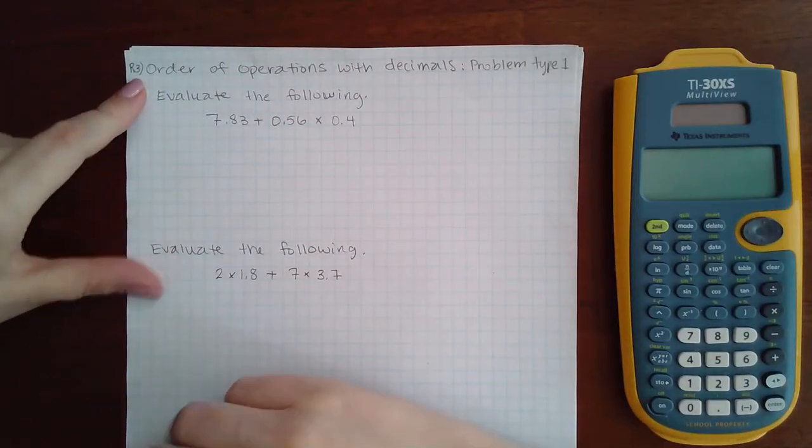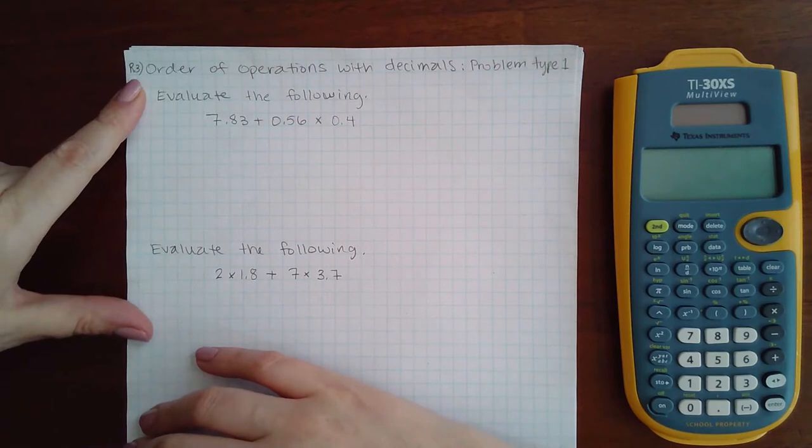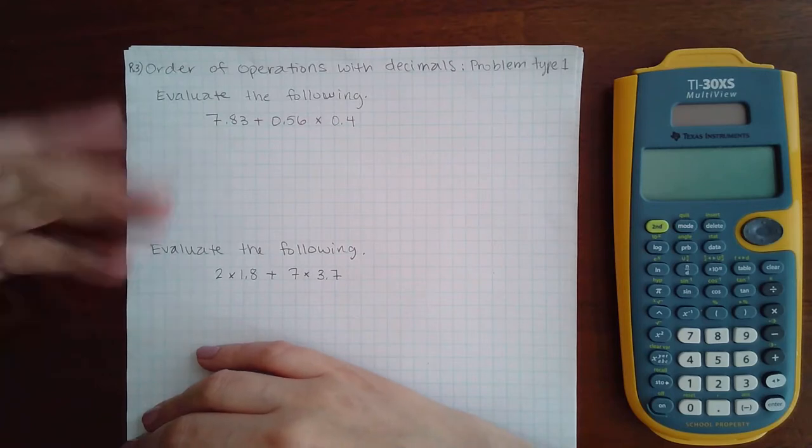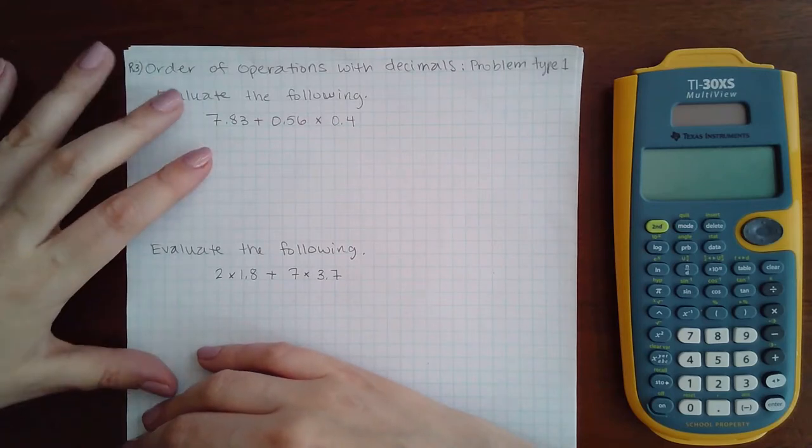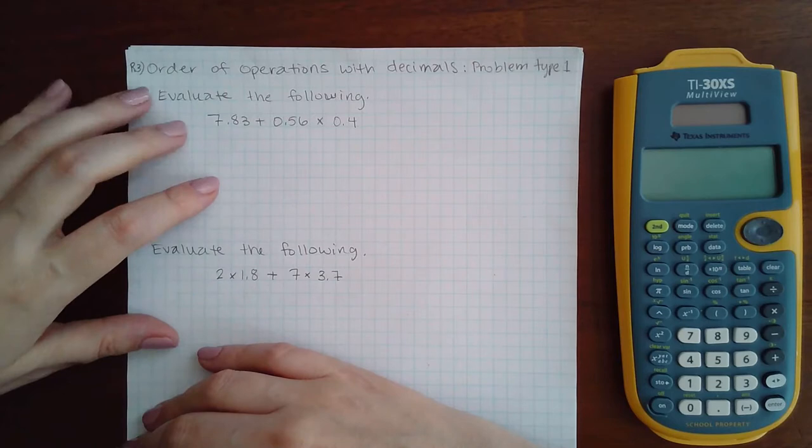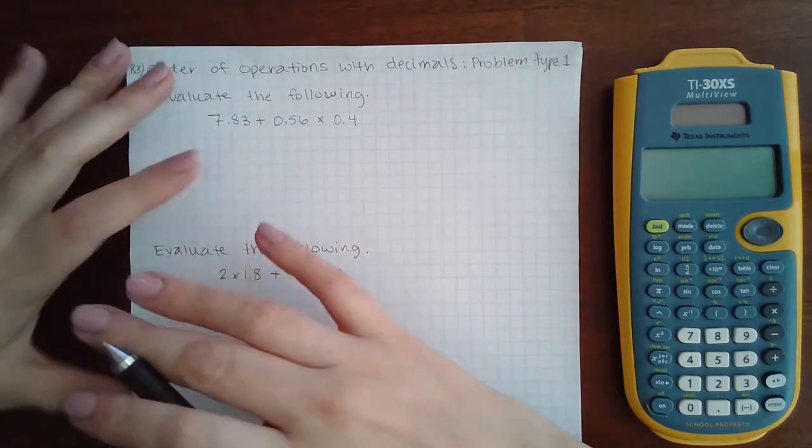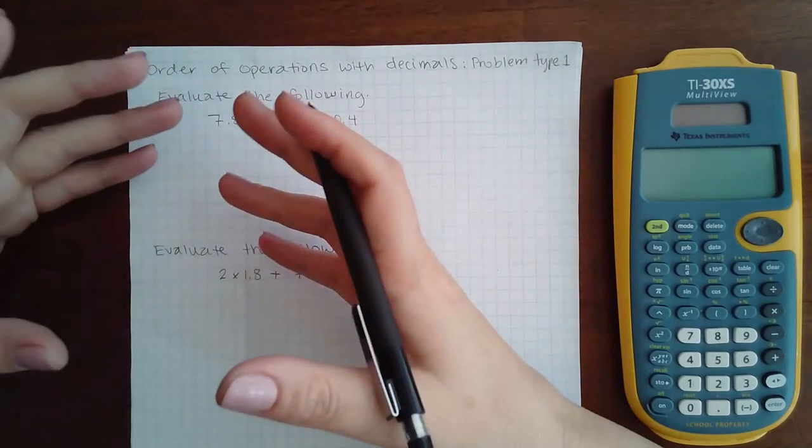This is section R3, order of operations with decimals, problem type one. The most important thing is to make sure, like on a test, that you show the steps that you're calculating. Most of the decimal work we will be using the calculator for, but it is important that you show what you did first and what you did second and so on.